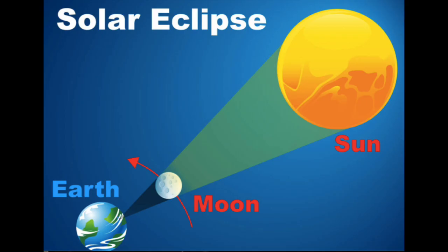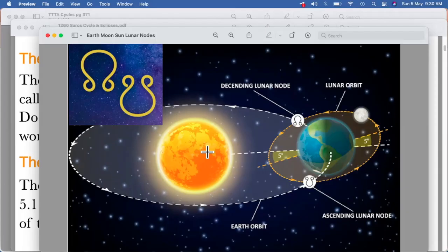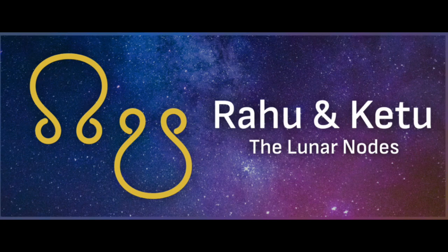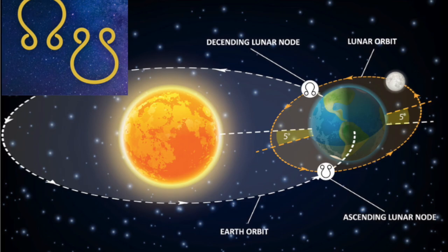So we know that we have the sun. Whenever the moon comes in between the earth and the sun, we get an eclipse. But for that it has to be very precise. It has to be only there on the ascending lunar node and the descending lunar nodes, which are also called Rahu and Ketu.